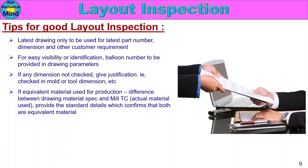If any material used for production differs between the drawing material specification and the mill test certificate, provide the standard details confirming that both are equivalent materials. For example, if the customer drawing specifies a JIS standard and we use an ASTM standard, we must provide justification to the customer confirming material equivalence.